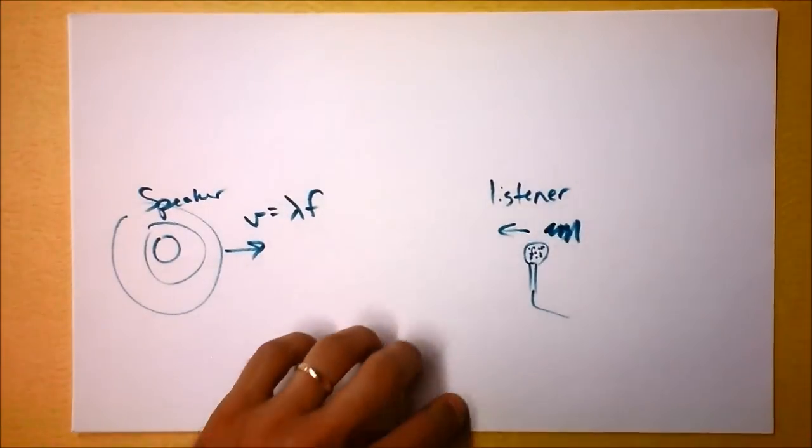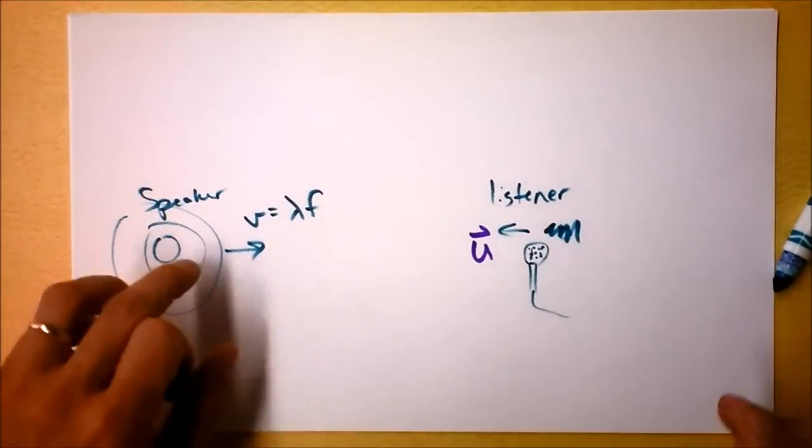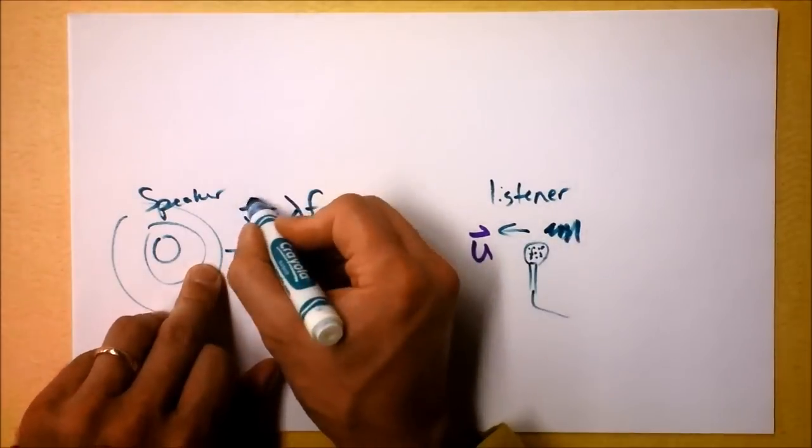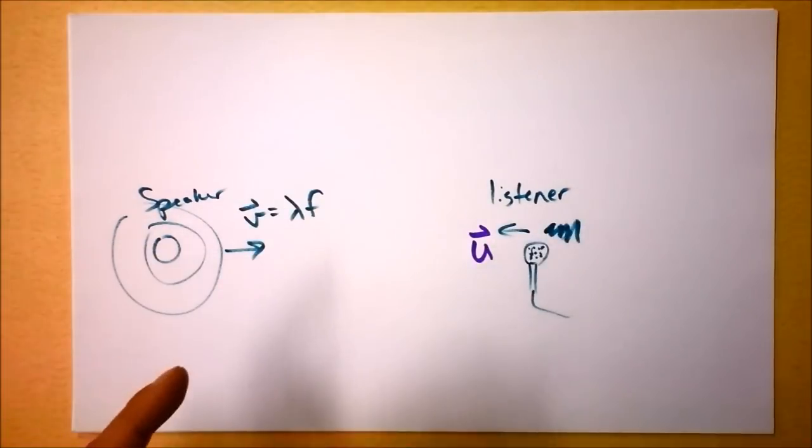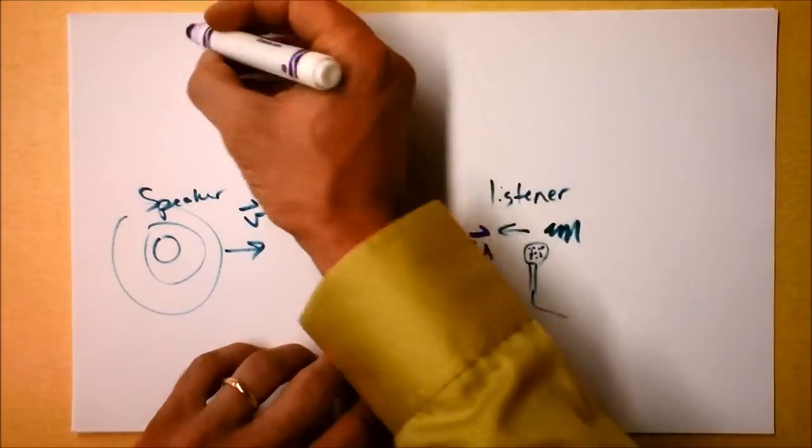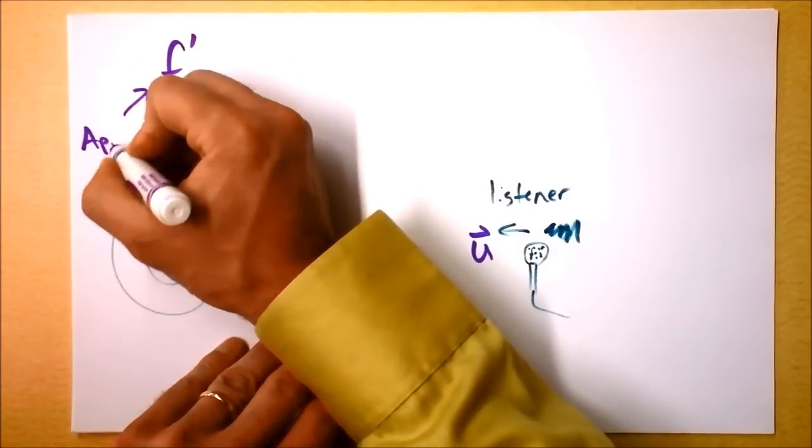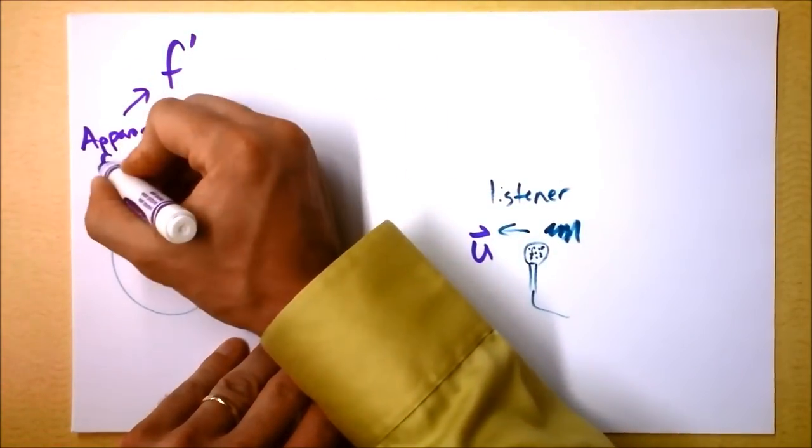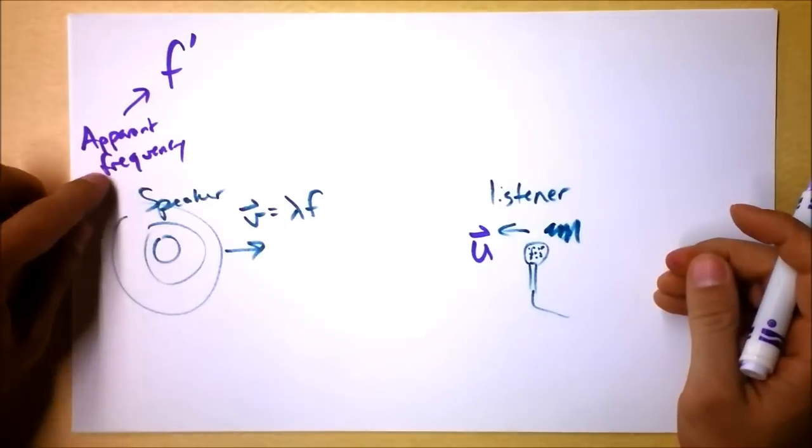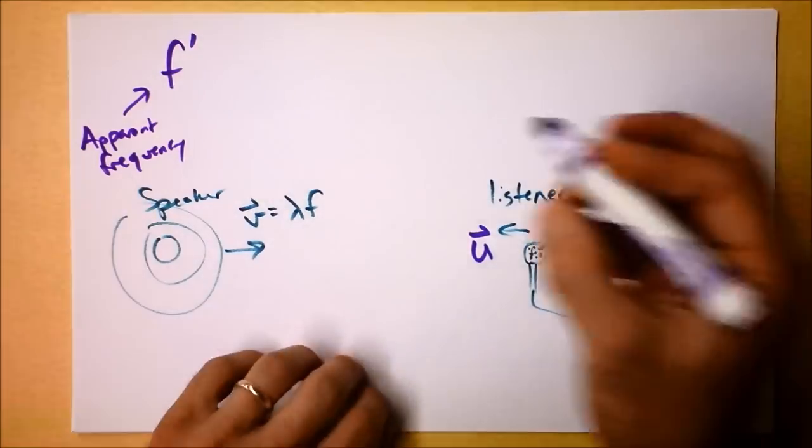But let's do the simplest case. The simplest case is if the microphone, that's U, is moving towards the source of the sound. So V is that direction and U is that direction. And we can define an apparent frequency. Our apparent frequency will be F prime, and I'm going to label this as apparent frequency, or we could call it the frequency as seen by the listener, the observed frequency.